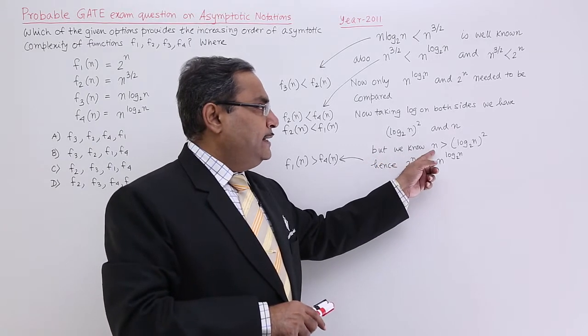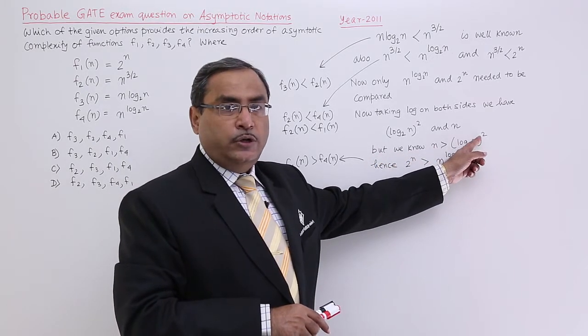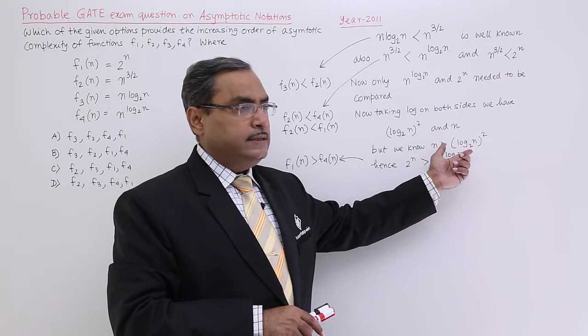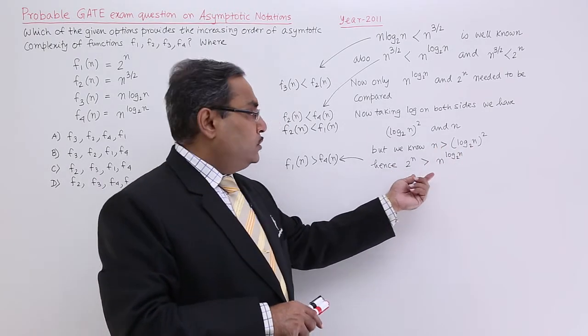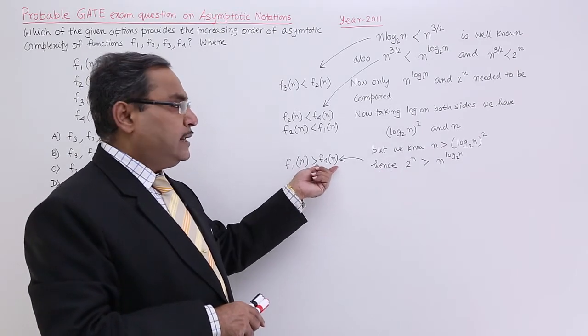But we know that n is always greater than this. You can put some values for n, you can easily test. Hence this is greater than this. It indicates that f1 is greater than f4.